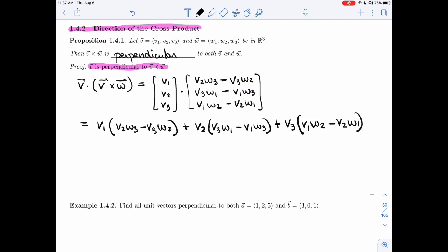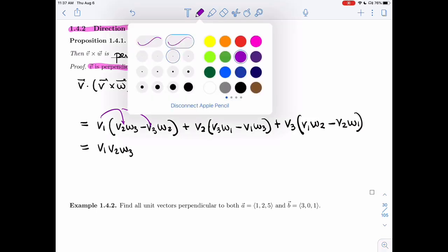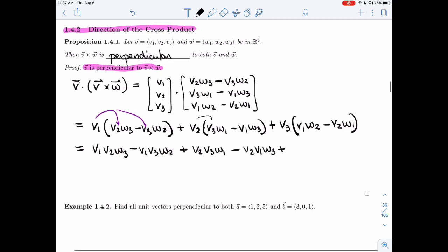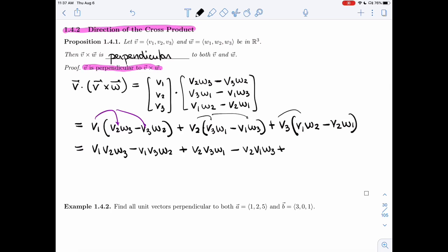Let's expand this. V1 V2 W3. That's this one, and then I need that one. That's going to give me minus V1 V3 W2. Next term here, that will be V2 V3 W1 minus V2 V1 W3 plus, and then here I have these two terms, V3 V1 W2 minus V3 V2 W1.